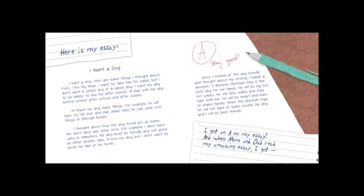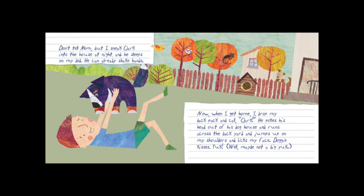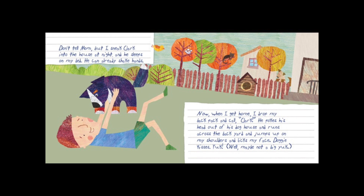He will be big but not jumpy. He will take walks and stay right with me. He will be smart and learn to shake hands. When the doorbell rings, he will not bark or scare people. My dog and I will be best friends. I got an A on my essay, and when Mom and Dad read my amazing essay, I got a Bernese Mountain Dog named Clark Kent. Mellie got a Maltese named Lois Lane. I sneak Clark into the house at night and he sleeps on my bed — he can already shake hands.